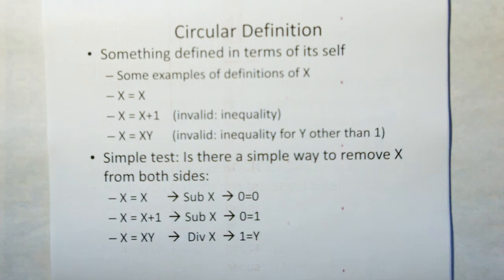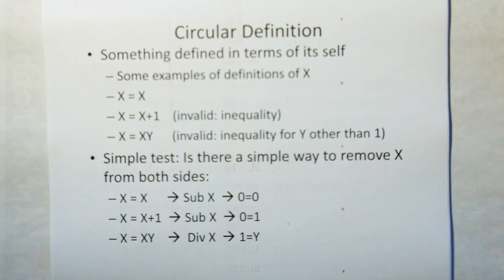A circular definition is something defined in terms of itself, like saying red is red, obviously. Well, that's not a definition. That's just saying red is red. That doesn't tell me what red is.